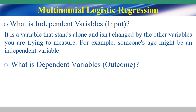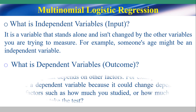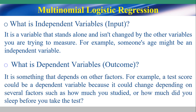What is the dependent variable, or outcome? It is something that depends on other factors. For example, a test score could be a dependent variable because it could change depending on several factors, such as how much you study or how much sleep you got before taking the test.